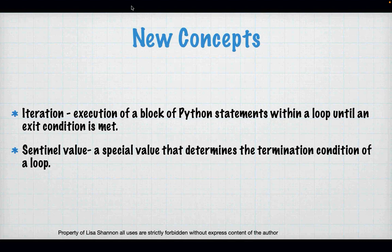New concepts: iteration is the execution of a block of Python statements within a loop until an exit condition is met — each time you go through one round of that loop is one iteration. A sentinel value is a special value that determines the termination condition of the loop, and sentinel values are important in while loops.